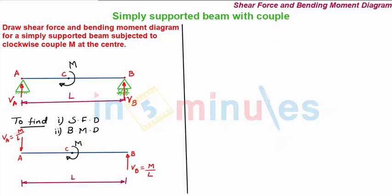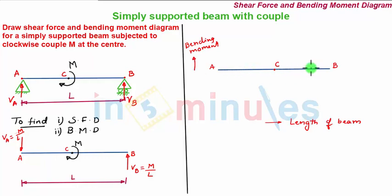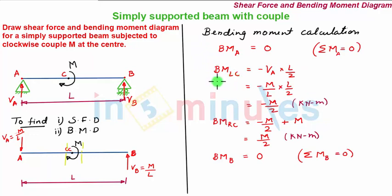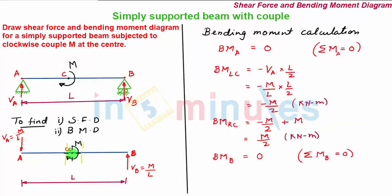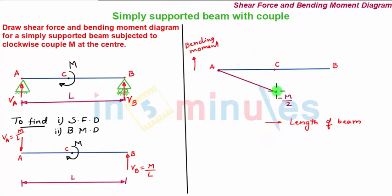Now let's draw the bending moment diagram. The beam is shown as the zero bending moment line; positive bending moment is plotted above the line and negative below, with the length of the beam along the x-axis. Since bending moment at A is 0 and bending moment just to the left of C is minus M/2, and there is no force between A and C, the variation between these two points is a straight inclined line.